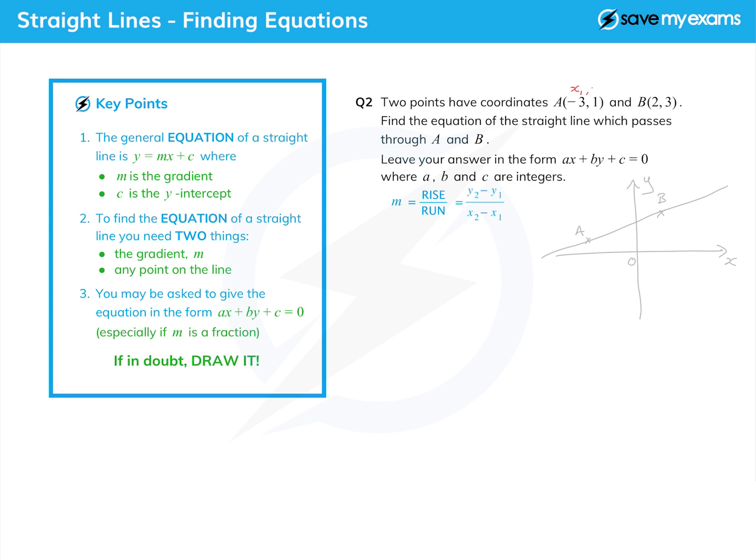If we call this one x1, y1, and this one, that's B, x2, y2, we can now just find the gradient from that. So m equals, right, 3 minus 1, that's y2 minus y1, and then making sure we go the same way, so we're doing B minus A here, that's 2 minus minus 3, and be careful with that extra minus sign.